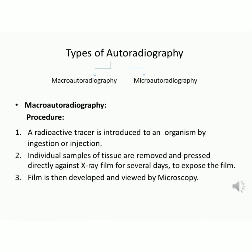Types of Autoradiography: Macroautoradiography and Microautoradiography. In Macroautoradiography, a radioactive tracer is introduced to an organism by ingestion or injection. Individual samples of tissue are removed and pressed directly against X-ray film for several days to expose the film. Film is then developed and viewed by microscopy.